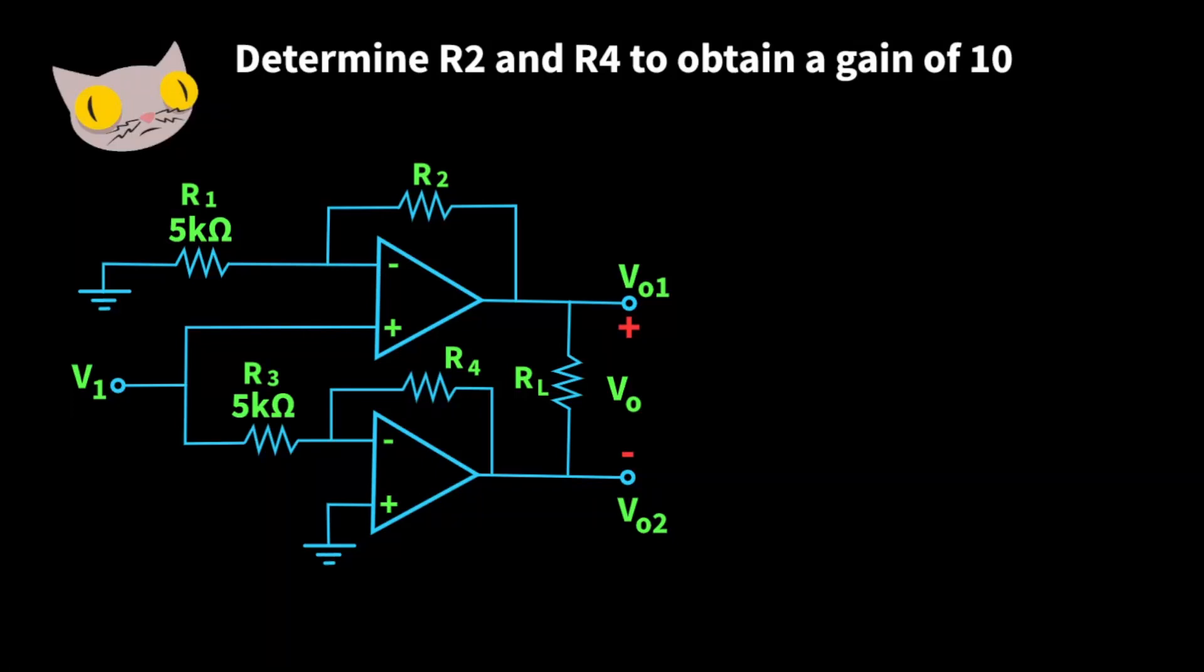Here's a problem similar to something you might find on the Fundamentals of Engineering exam. So we have two op amps here, and we need to determine the value of R2 and R4 in order to obtain a gain of 10.